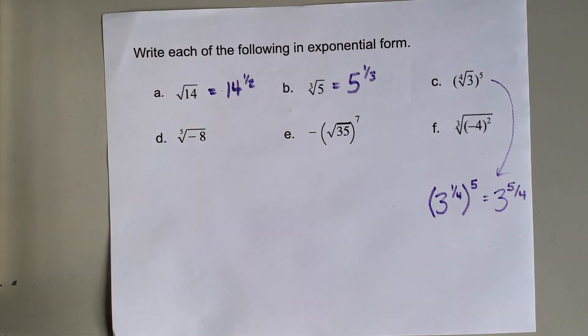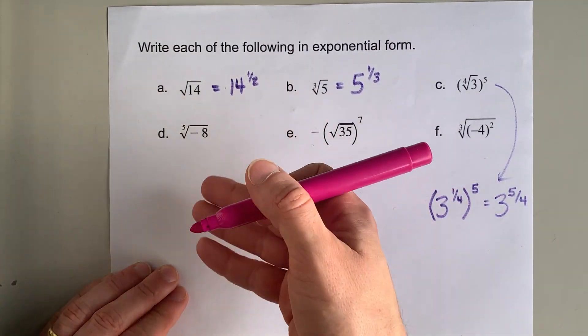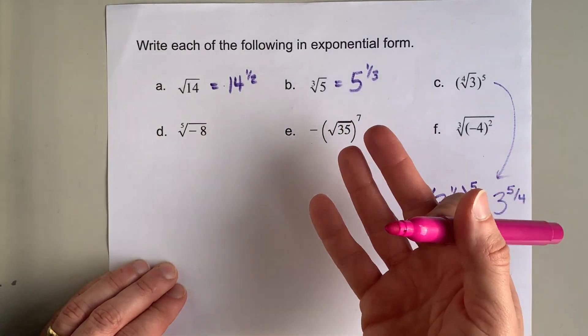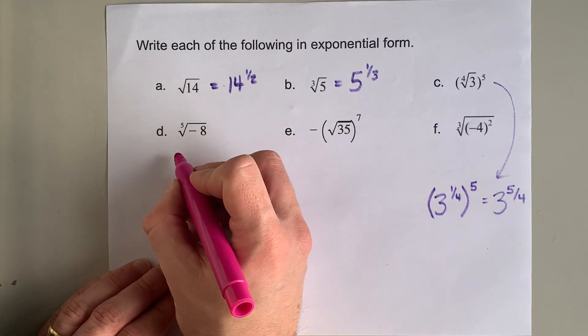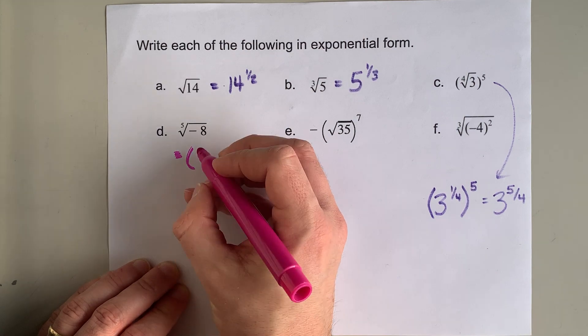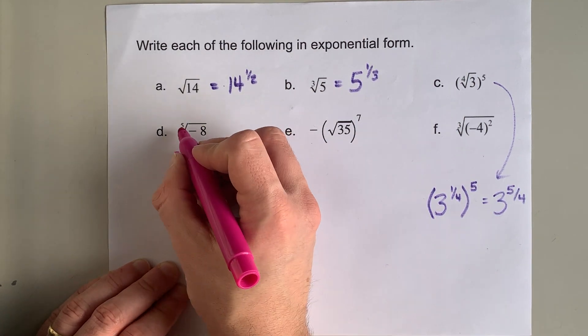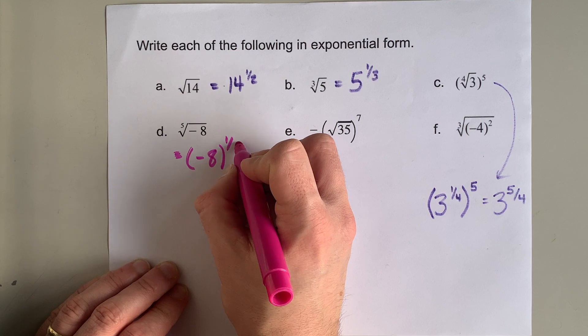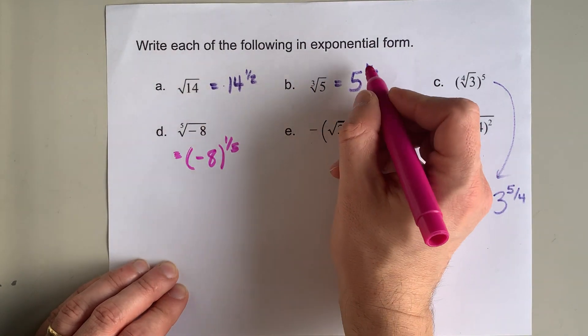We have the fifth root of negative eight. Now, you can't take the square root of a negative and stay in the real numbers, but you can take odd roots. So I'm going to keep my negative eight here and raise it to the power of the fifth root, which is one fifth, just like cube root was one third.